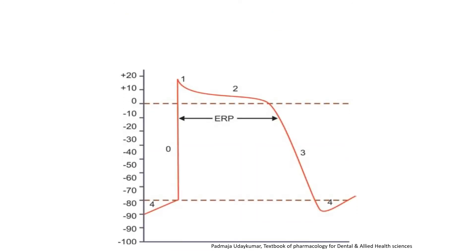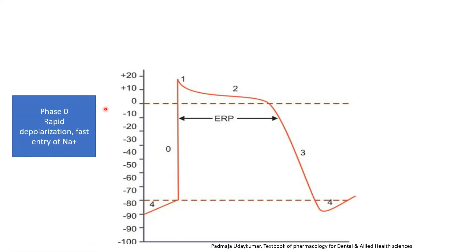The cardiac action potential consists of four different phases: phase zero, one, two, three, and phase four. Initially, the resting membrane potential is minus 90 millivolts, meaning the cardiac membrane is more negative. When a proper stimulus arrives, the sodium channel opens, causing fast entry of sodium ions, leading to rapid depolarization — seen as a sharp rise in the graph — where the membrane goes from minus 90 to close to plus 10 millivolts.